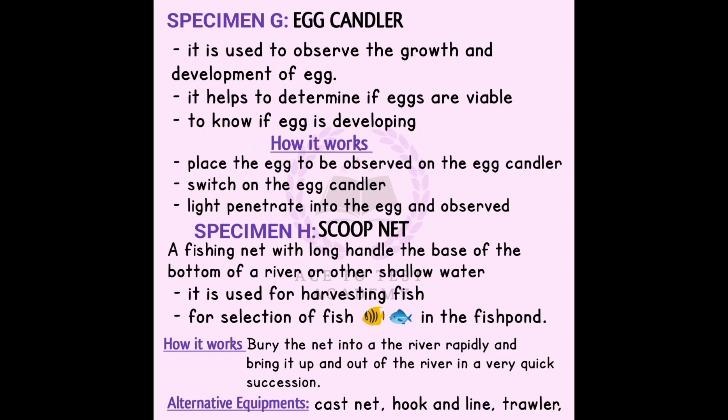Moving to specimen G, which is the egg candler. The egg candler is used to observe the contents and viability of an egg. It helps determine if the egg is viable and if the embryo is developing. To use it, you place the egg on the egg candler and light it up. The light will penetrate the egg — some eggs will appear light and some deep/dark — allowing you to observe whether the embryo is developing or not.